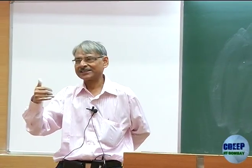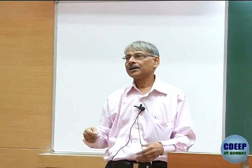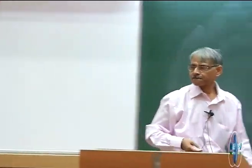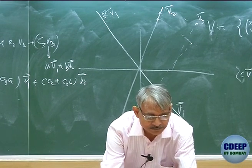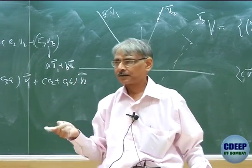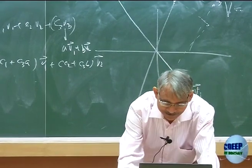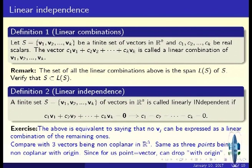There is an optimal number of vectors: if you drop two from {V₁, V₂, V₃}, the span shrinks to a line. You can drop any one Vⱼ without affecting the span, but you cannot drop two. To formalize these ideas, we define linear independence. A finite set of vectors {V₁,...,Vk} is called linearly independent if whenever C₁V₁ + C₂V₂ + ... + CkVk = 0, it forces C₁ = C₂ = ... = Ck = 0 — that is the only way the linear combination can be zero.